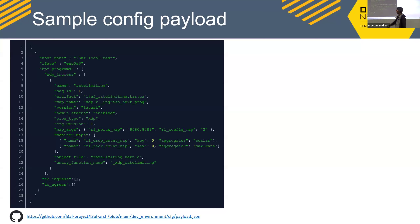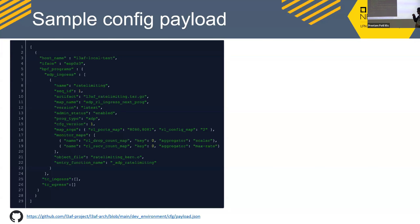The map arguments are config arguments deployed to BPF config maps — specifying map name and values. The metrics map section specifies which key to read and what aggregator to use for publishing. The payload also includes the object file name and the entry function name — the object file is used to load the eBPF program, and the entry function is the first function invoked. Its FD is then attached to the previous program to maintain the chain. LEAF today supports XDP, TC ingress, and TC egress program types.